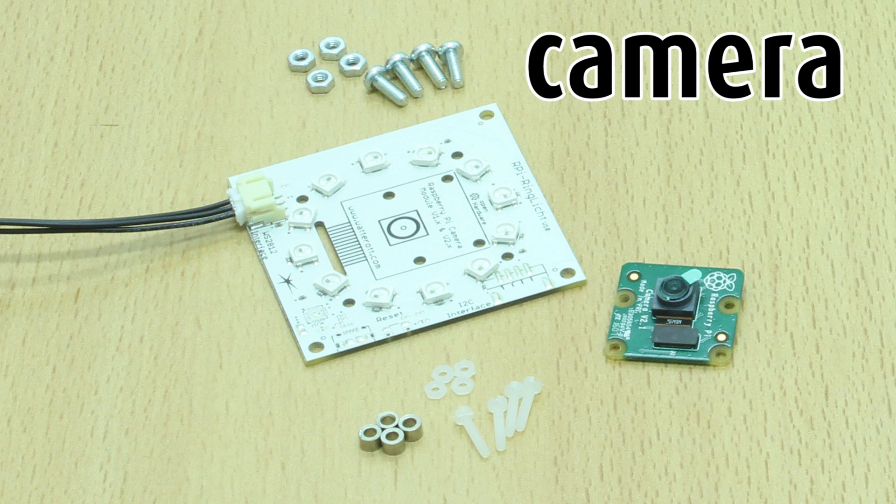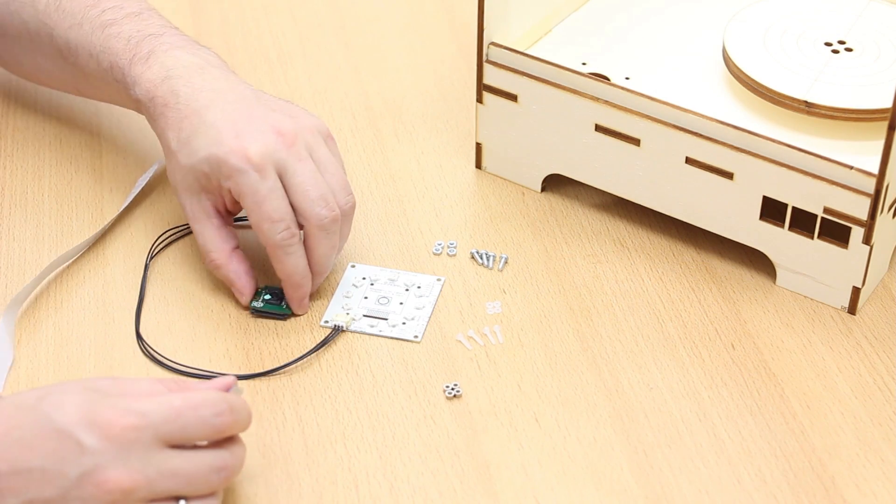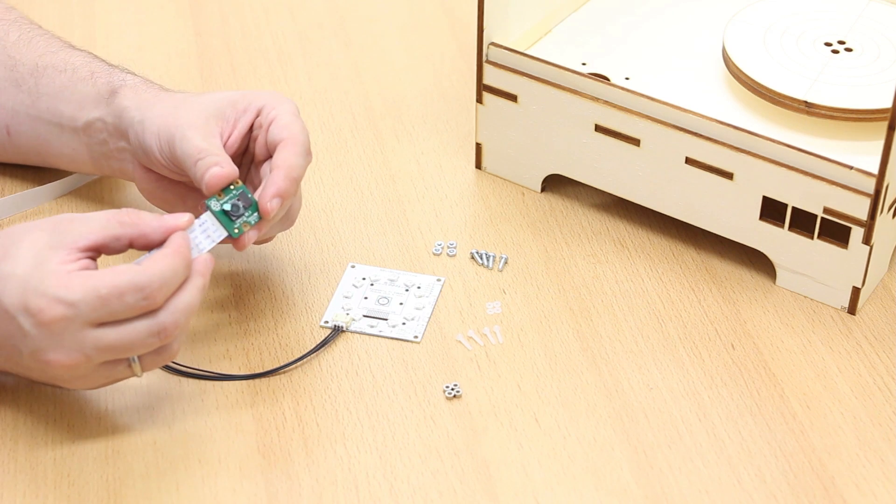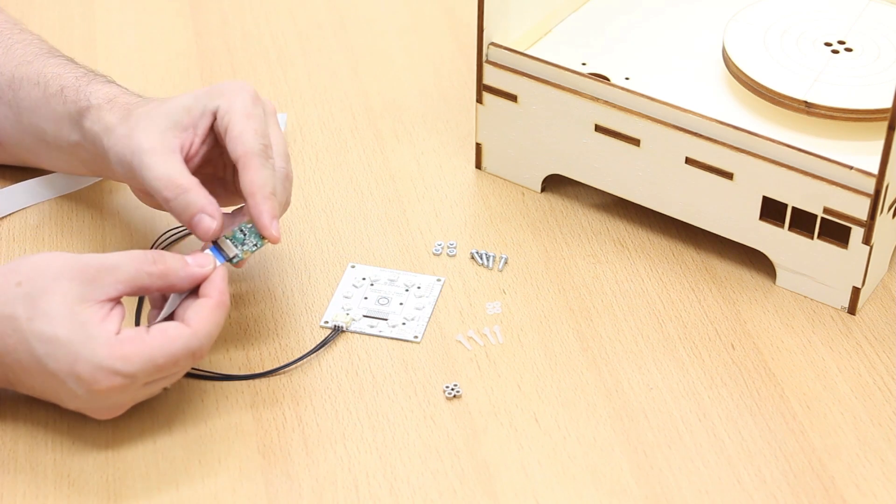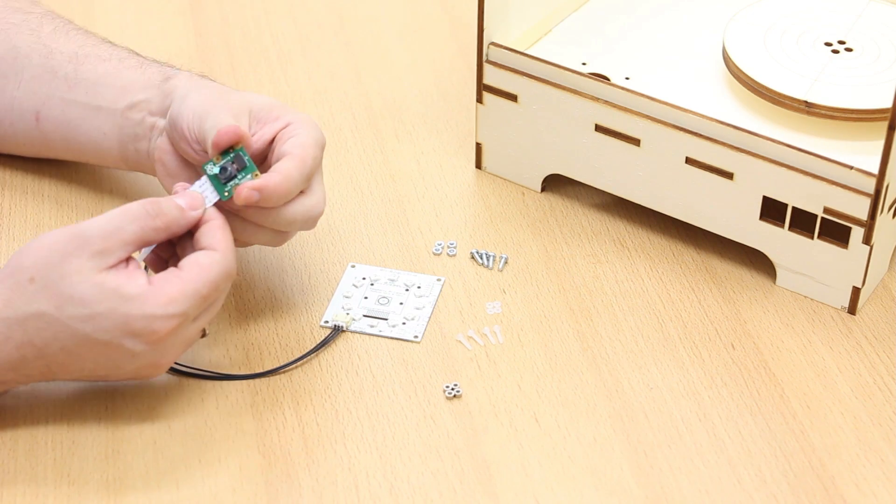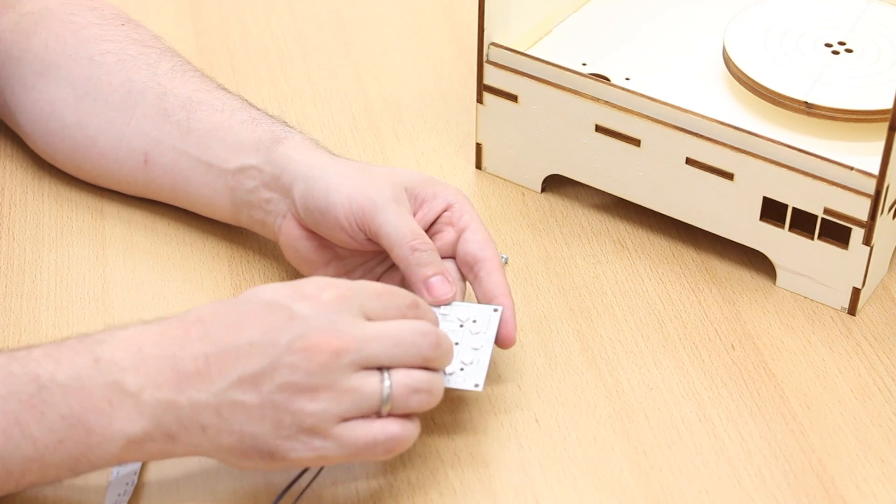So continue with the camera. The camera consists of a camera module. We start with inserting the ribbon cable. You have to be careful about the orientation. The blue side goes to the electronics, the component side and not to the camera side.